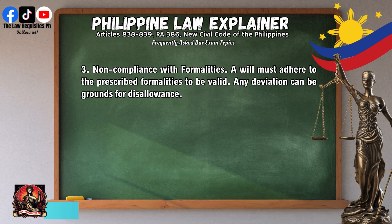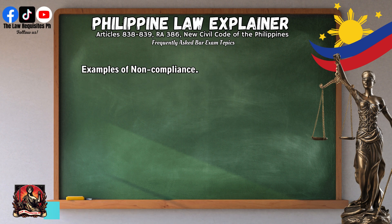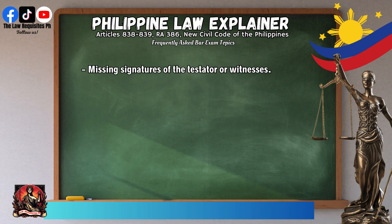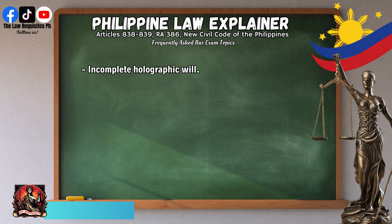Third, non-compliance with formalities: a will must adhere to the prescribed formalities to be valid, and any deviation can be grounds for disallowance. Examples of non-compliance include missing signatures of the testator or witnesses, lack of proper acknowledgement before a notary public, and an incomplete holographic will.